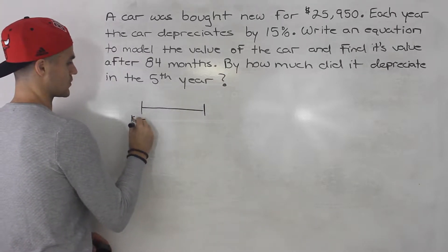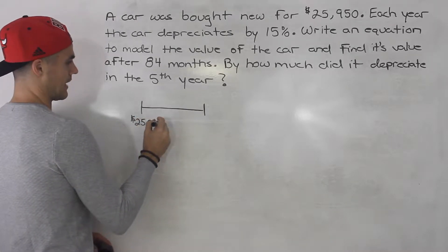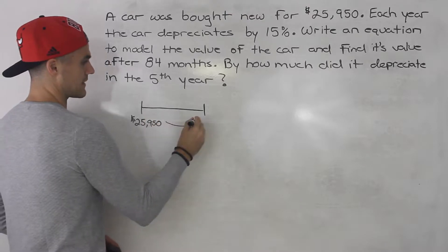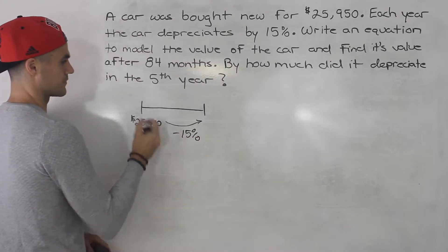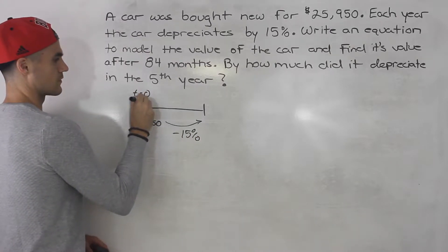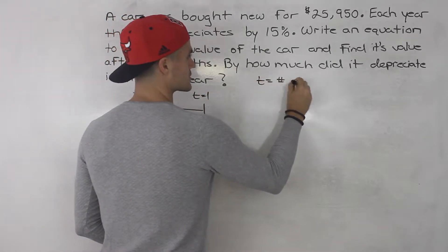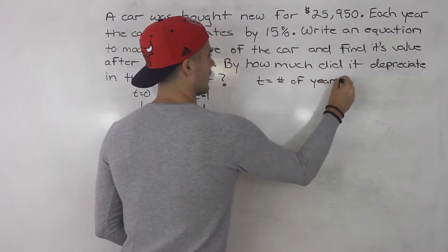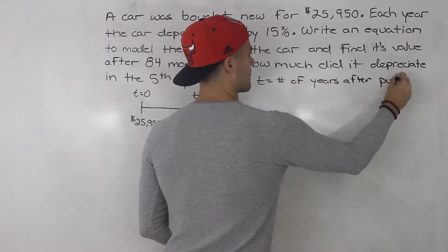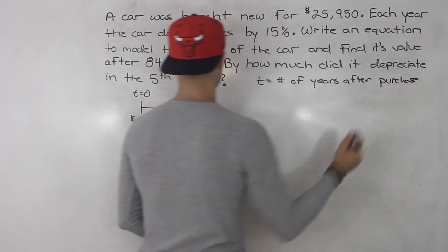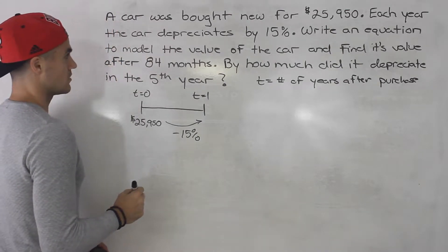We're buying the car now for $25,950, and each year it's depreciating by 15%. Let's say this is a t-value of zero, t-value of one, where t is the number of years after purchase. So every year the value is just going down by 15%.